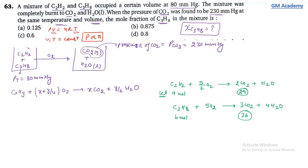Initially: (A + B) ∝ 80 mm Hg. After combustion: (2A + 3B) ∝ 230 mm Hg.